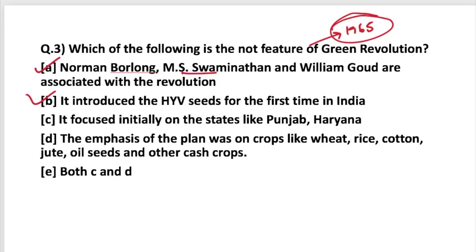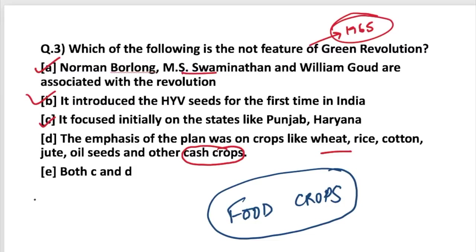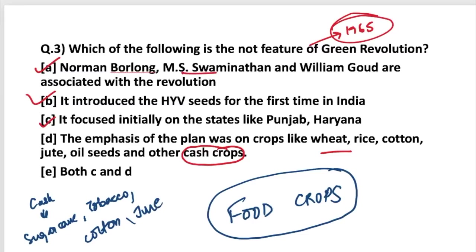The Green Revolution initially focused on states like Punjab and Haryana — correct, as it started as a pilot project there. The next statement says the emphasis was on crops like wheat, rice, cotton, jute, oil seeds, and other cash crops — this statement is incorrect. The Green Revolution was not focused on cash crops or commercial crops, but highly focused on food crops. Food crops like wheat and rice were included. Cash crops like sugarcane, tobacco, cotton, and jute were not included.